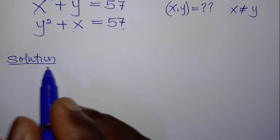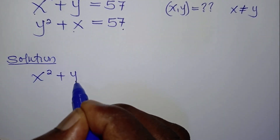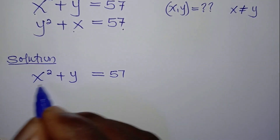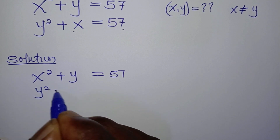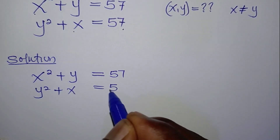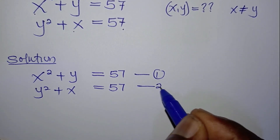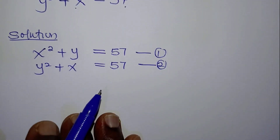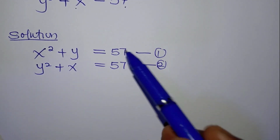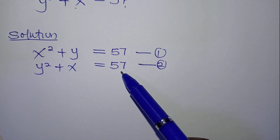We're going to rewrite these equations. We have x squared plus y equals 57 — call this equation 1. Then we have y squared plus x equals 57 — call this equation 2. So clearly, both equations are equating to 57.